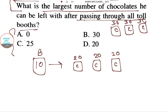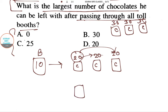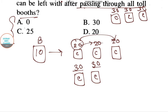Now he does one smart thing: he transfers the 20 chocolates equally into the other two boxes. So now he has two boxes that each contain 30 chocolates, and the third empty box is discarded.